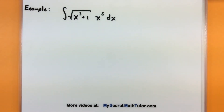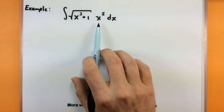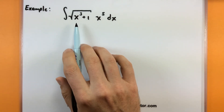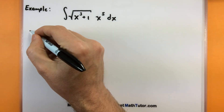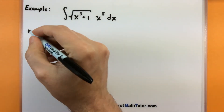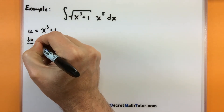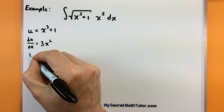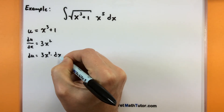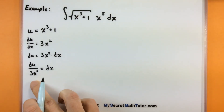One last example — I promised to show one where things don't quite go correctly, but you can still salvage it. There's no obvious place to choose u here. If I choose one piece, its derivative gives x to the fourth — not present. If I choose another, I get 3x squared — also not present. In cases like that, it's a good idea to choose u to be the piece inside another function. So let u equal x cubed plus 1. Taking du/dx: we get 3x squared. Solving for dx: du equals 3x squared dx, so dx equals du over 3x squared.